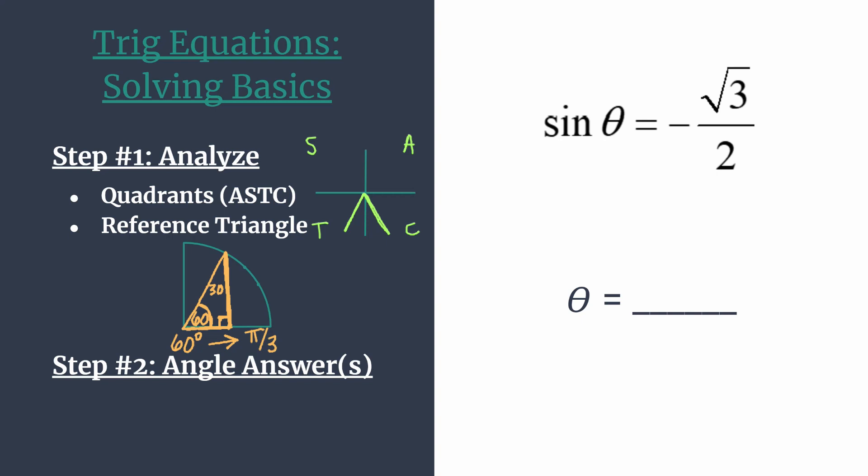As we move on to step 2, we know that the reference angle for each of our angles, the ones in quadrant 3 and 4, the reference angle here is going to be equal to pi over 3. And that's going to help us in our determination for our answers. Remember that a reference angle is just the amount of rotation from the terminal side of an angle to the x-axis.